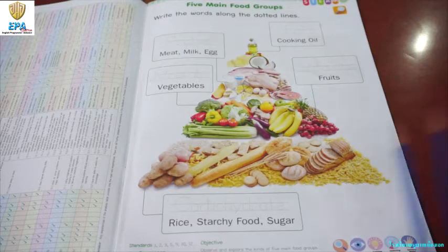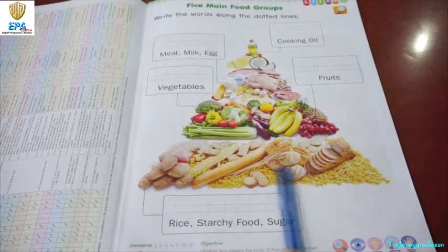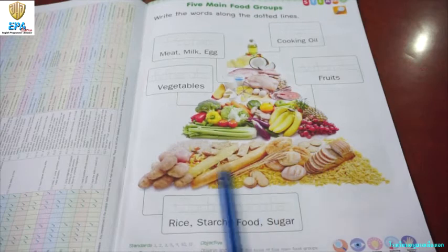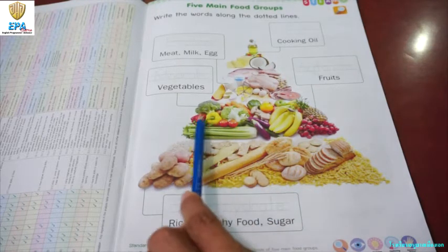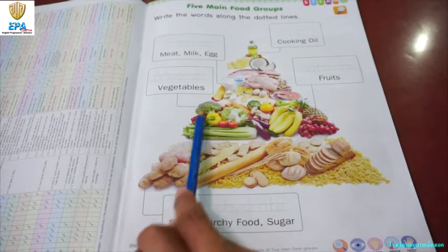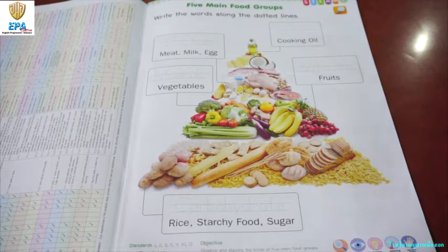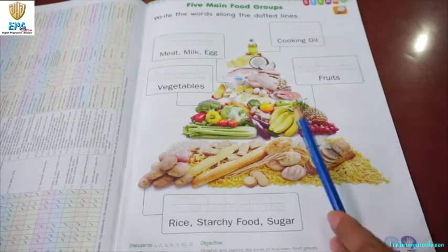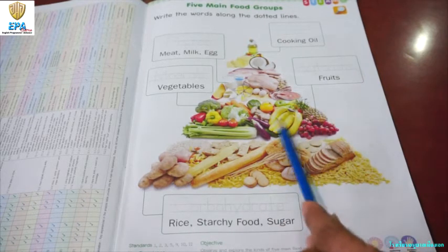Examples of foods rich in carbohydrates are rice, starchy food, and sugar. So we have here the examples of foods that are rich in carbohydrates. How about foods that are rich in minerals? Of course we have vegetables. So we have here examples of vegetables. And for food rich in vitamins, we have here different kinds of fruits, as you can see in this picture.